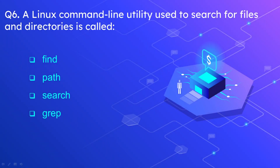Question number 6: A Linux command line utility used to search for files and directories is called — options are find, path, search, and grep. The correct option is find.